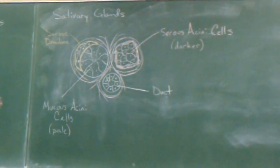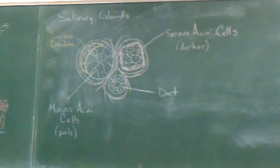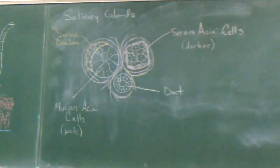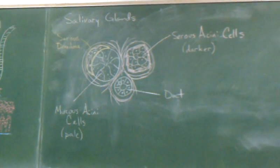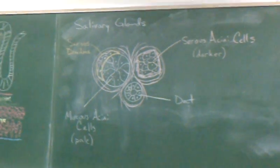You've got a piece of parotid, a piece of sublingual, and a piece of submandibular. You've got three separate amounts.